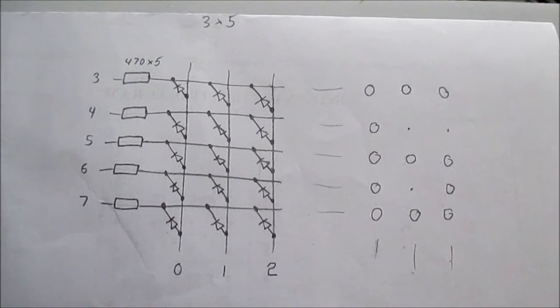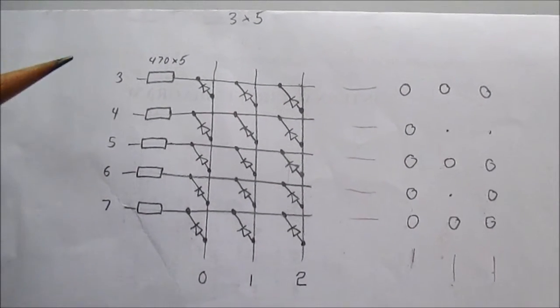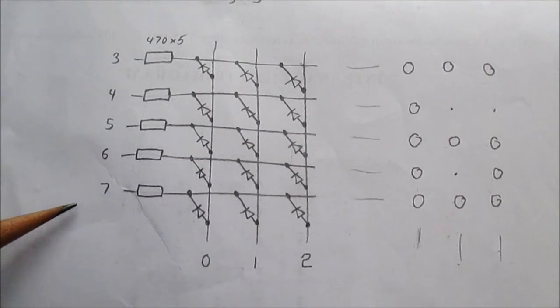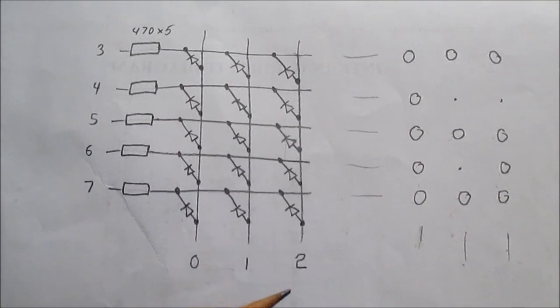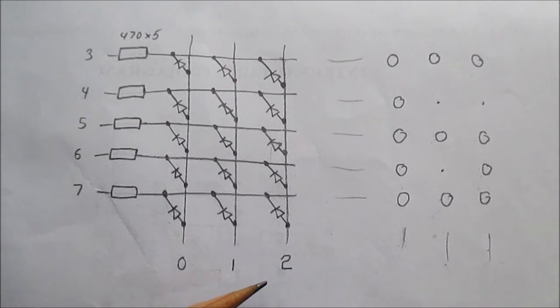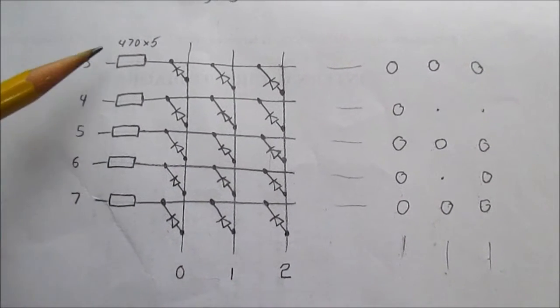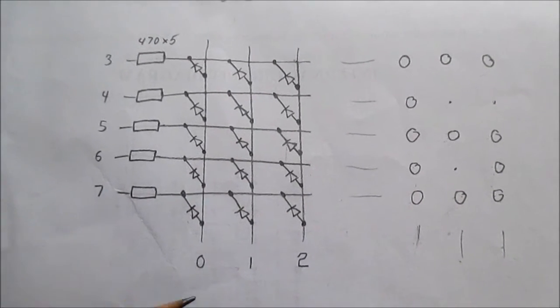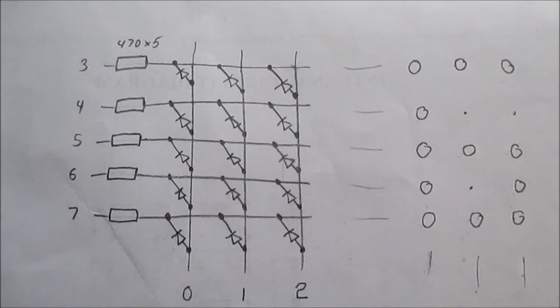A while back I did a video about display multiplexing, where I had eight output lines from a microcontroller, a pretty simple microcontroller, and arranging them in an array such as this, I had five rows, three columns, I could control 15 LEDs.